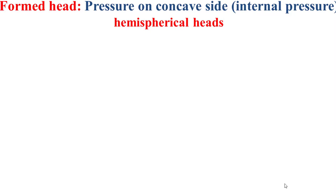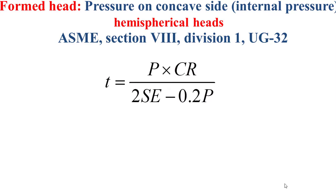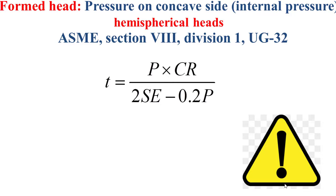Now I will explain how to determine the appropriate thickness of a hemispherical formed head subjected to pressure on the concave side, which means internal pressure, based on ASME Section VIII Division 1 UG-32. We use this formula to determine the thickness. P is the internal design pressure, CR is the internal crown radius which is the internal radius of the sphere, S is the maximum allowable stress, and E is the joint efficiency.